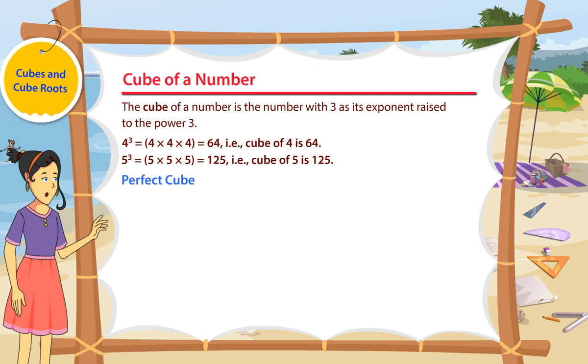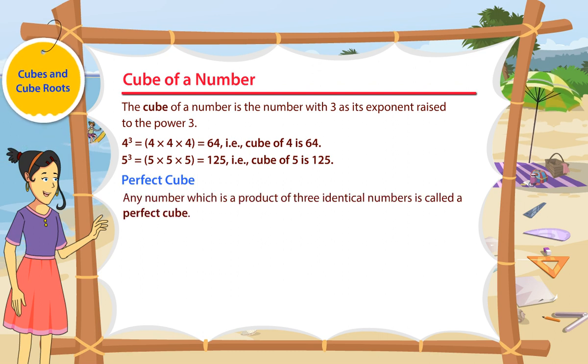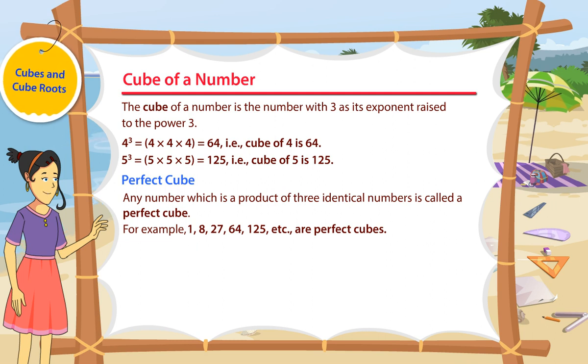Perfect Cube: Any number which is a product of three identical numbers is called a perfect cube. For example, 1, 8, 27, 64, 125, etc. are perfect cubes.